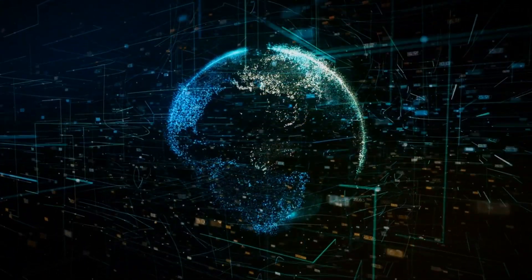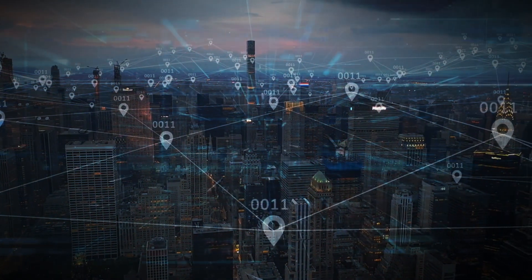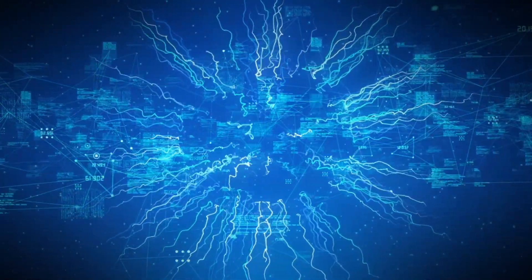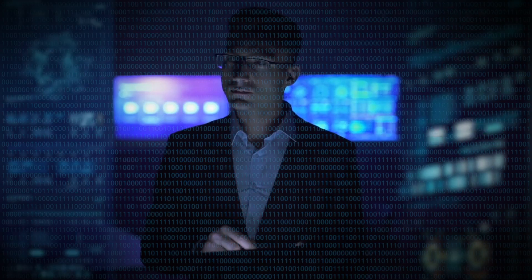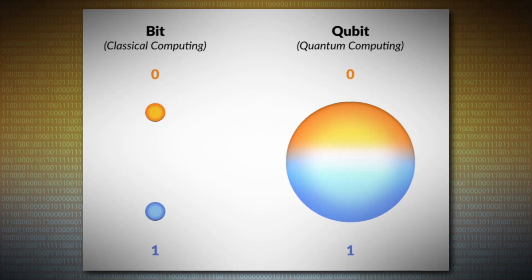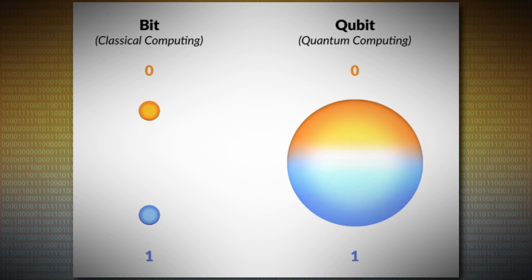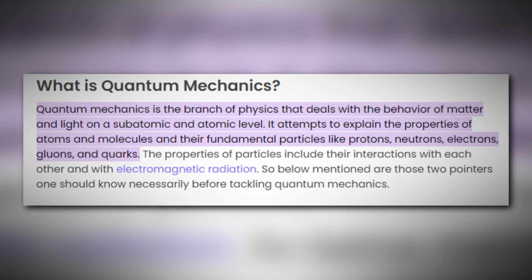Quantum internet in today's world is an emerging concept that utilizes quantum phenomena to enable secure and efficient communication and information processing. Just like quantum computing, quantum internet is also the next big leap in internet. Here, data is transmitted as classical bits, zeros and ones. A quantum internet employs qubits, which can represent both zero and one simultaneously due to superposition. This is a fundamental aspect of quantum mechanics.